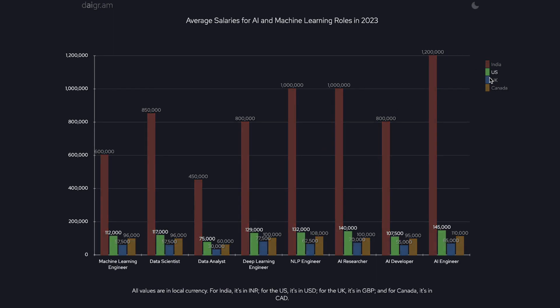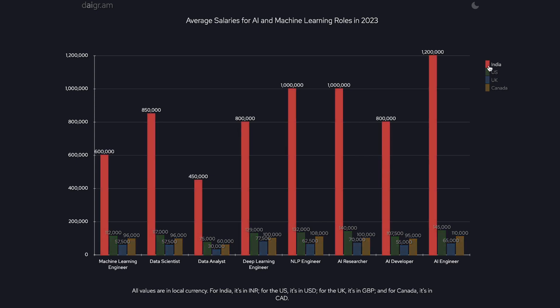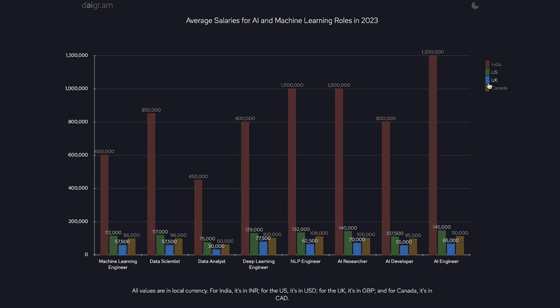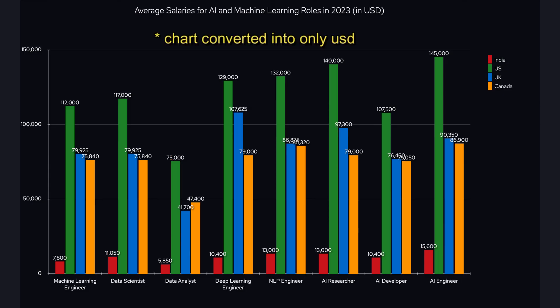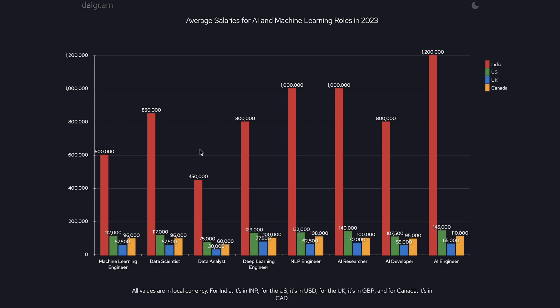It's a very visually appealing chart labeled with different colors — India in red, US in green, UK in blue, and Canada in yellow. However, the chart is a little skewed because all salaries are shown in local currency. So for India it's in Indian rupees, for the US it's in USD, for the UK it's in pounds, and for Canada it's in Canadian dollars. That's why it appears as though India pays more — it's not really comparing everything to USD, so the data is misleading.